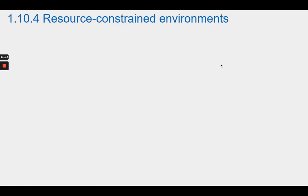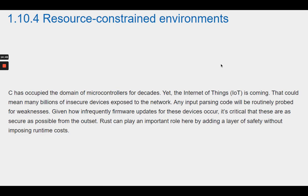Section 1.10.4 Resource-Constrained Environments. C has occupied the domain of microcontrollers for decades. Yet the Internet of Things, or IoT, is coming. That could mean many billions of insecure devices exposed to the network. Any input parsing code will be routinely probed for weaknesses. Given how infrequently firmware updates for these devices occur, it is critical that these are as secure as possible from the outset. Rust can play an important role here by adding a layer of safety without imposing runtime costs.